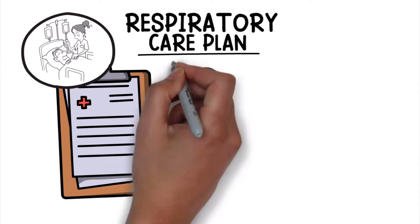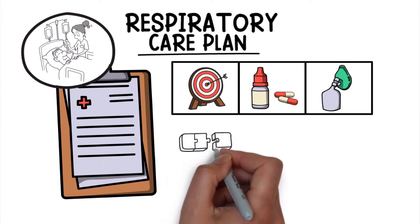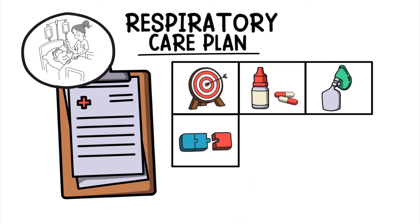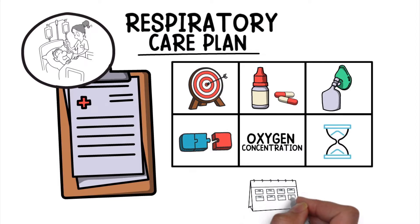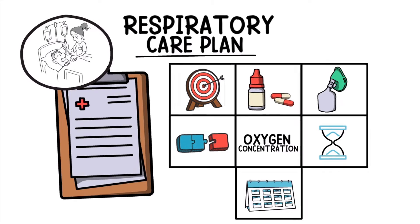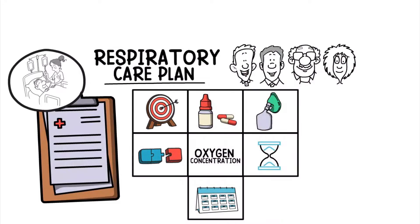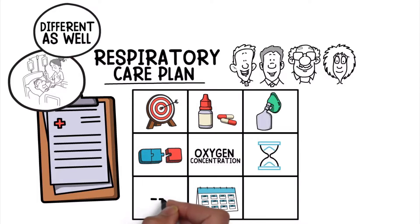Goals of therapy, medications, devices needed for therapy, methods and procedures, oxygen concentration, frequency of therapy, and the duration of therapy. Keep in mind that each patient is different, which means that each plan of care will be different as well. Note that a respiratory care plan may include other things that weren't mentioned — these are just some of the most common examples.